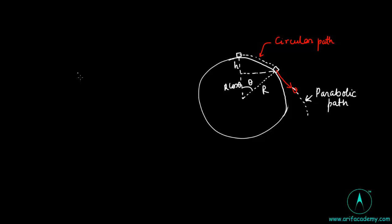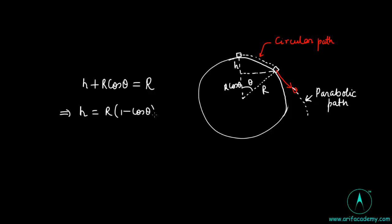At the instant when the particle leaves the sphere, the radius vector has rotated clockwise by angle theta, and the height descended by the particle is h. We have: h + r·cos θ = r, which implies h = r(1 - cos θ). This is equation number 1.